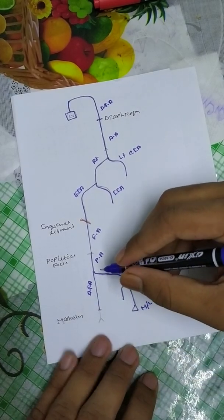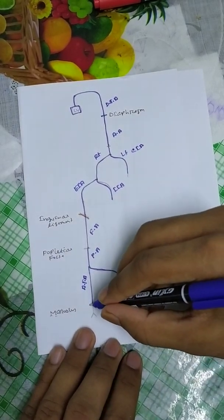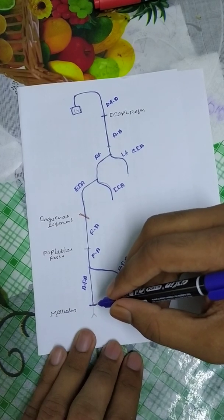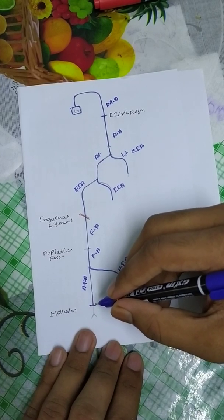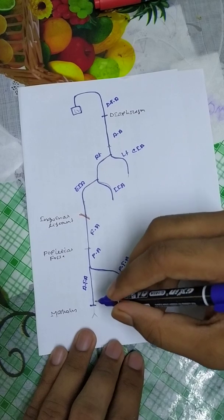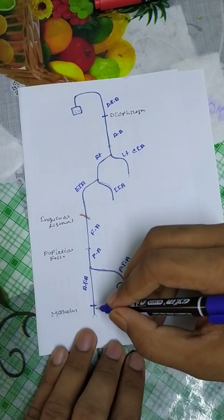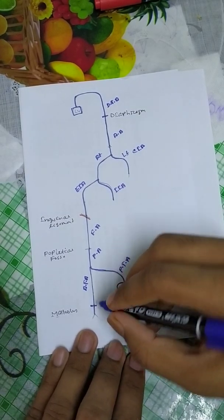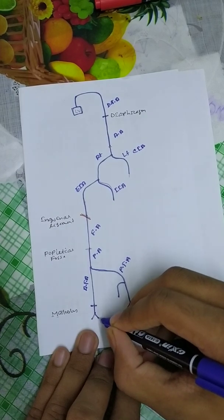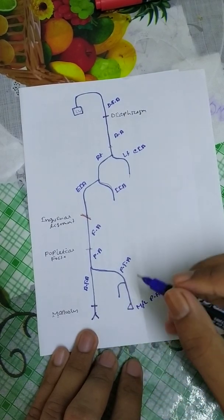From the plantar surface we get the medial plantar artery and lateral plantar artery. Below the medial or fibular malleolus, this artery is called the Arteria Dorsalis Pedis, which provides the foot supply.